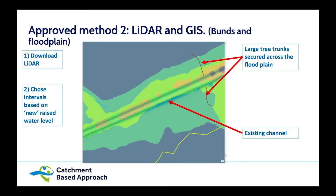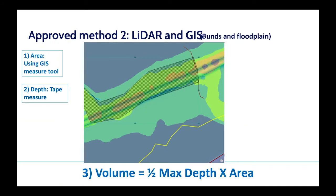The second method is using LiDAR and GIS. This is a project we delivered a couple of years ago where we put enormous tree trunks across the flood plain to create a backing up of water along the flood plain. I used LiDAR to identify the ground level at the lowest point where we put those tree trunks in, then added the depth of the tree trunk — that's where the water will weir over — and used that to create a contour on the map. That gives you the area of inundation behind the bund, and this approach is applicable for much bigger projects where you're creating bunds to create storage.